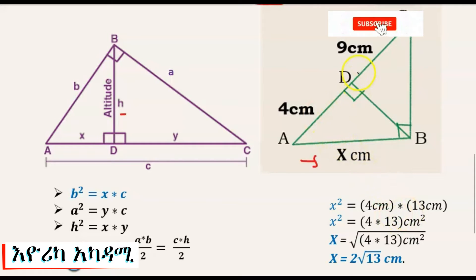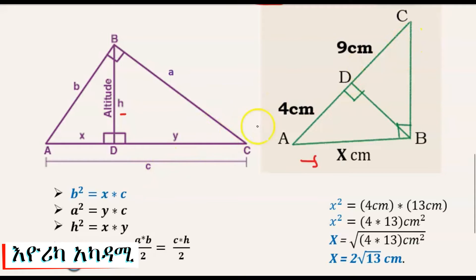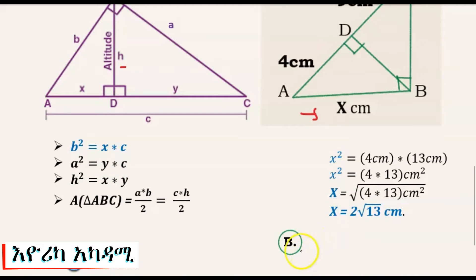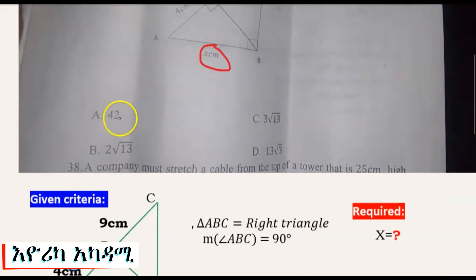So x squared equals 4 times 13 centimeters squared. Taking the radical, x equals the square root of 4 times 13, which simplifies to 2 radical 13 centimeters. So the value of x is 2√13 centimeters.